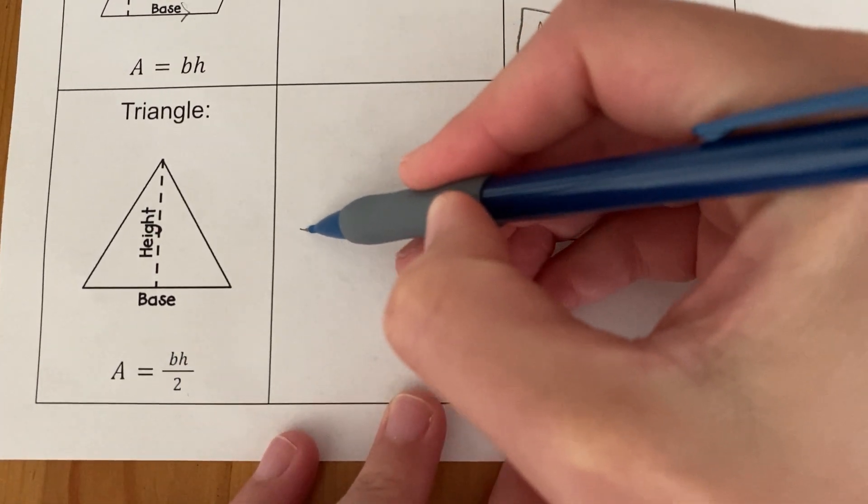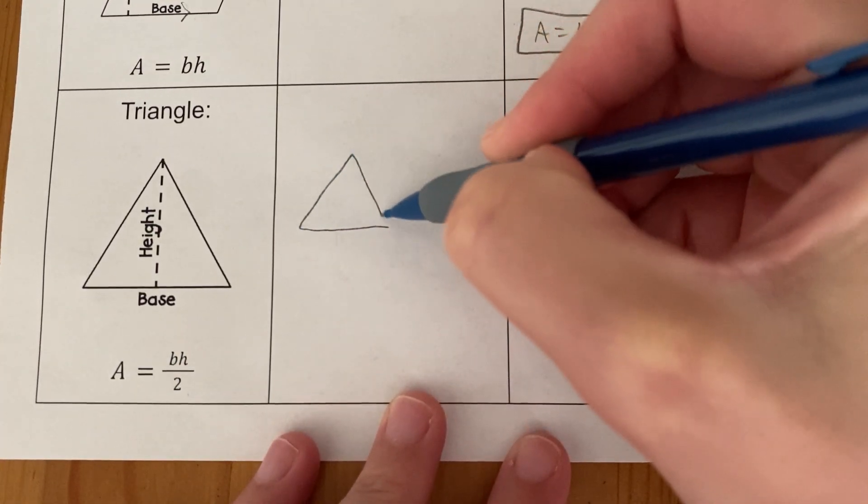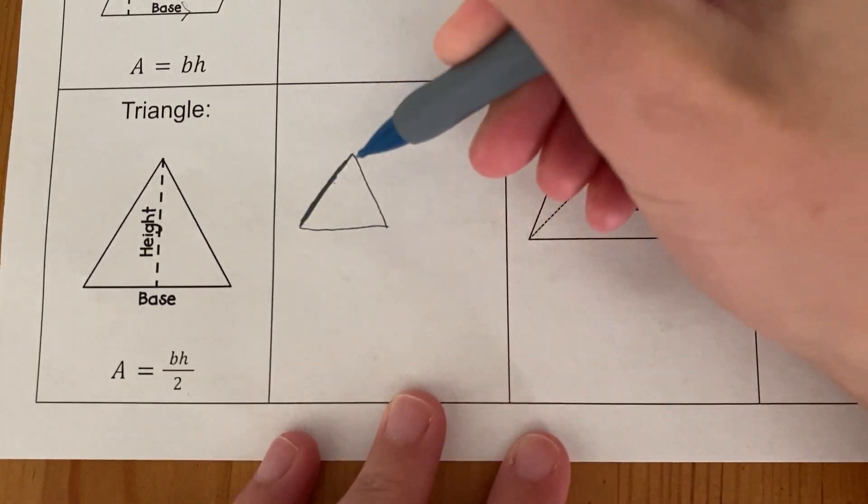Now, why would that be? Well, let's take a look. So here's a triangle. I'm going to draw it dark. This is the triangle that I want the area of.